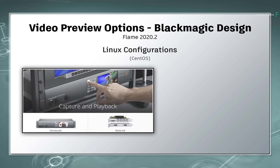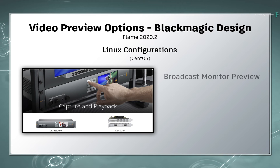The initial purpose of the Blackmagic Design hardware support on Linux is for previewing on a broadcast monitor. This is currently through the SDI and HDMI outputs.